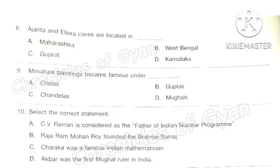Question 8: Ajanta and Ellora caves are located in which state? The correct answer is option A: Maharashtra. Question 9: Miniature paintings became famous under which rulers? The correct answer is option D: Mughals.